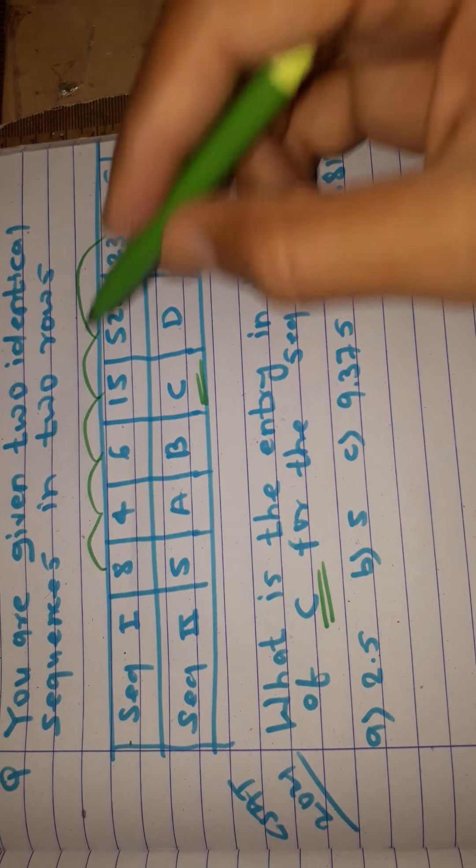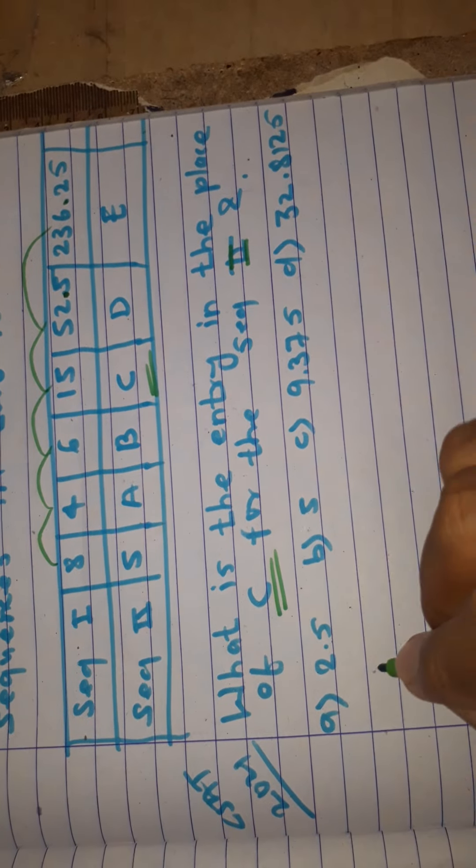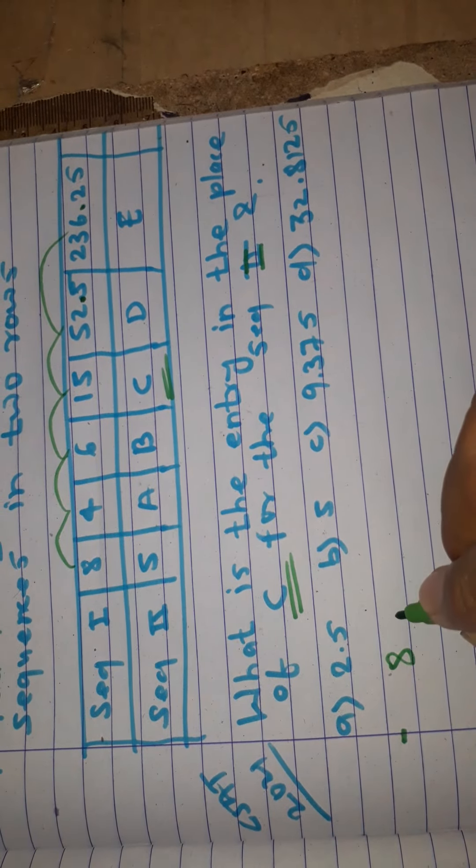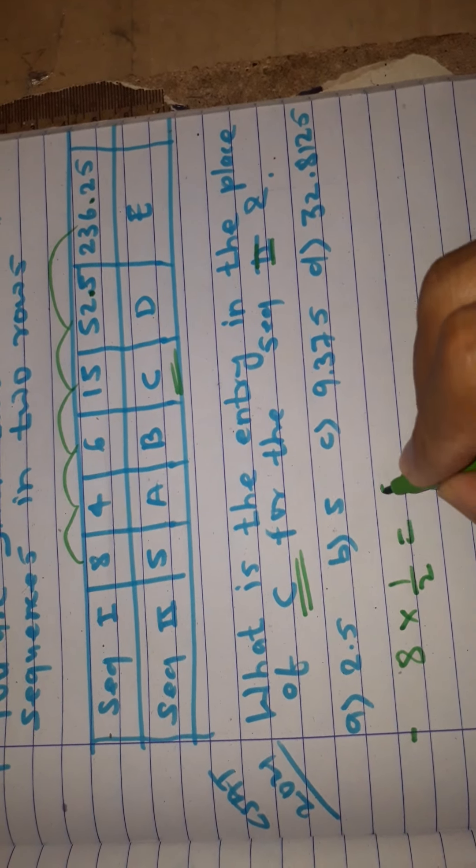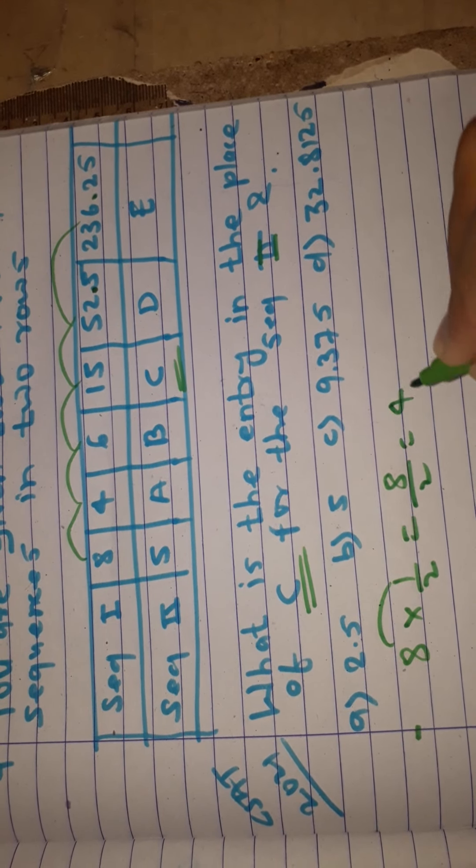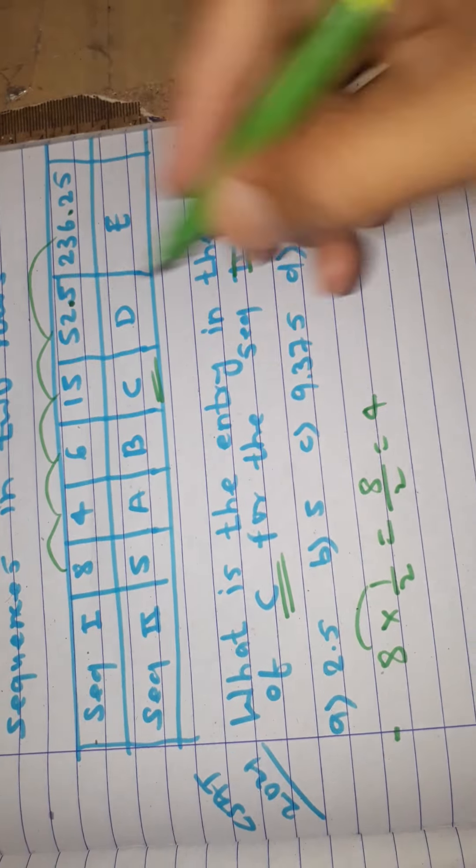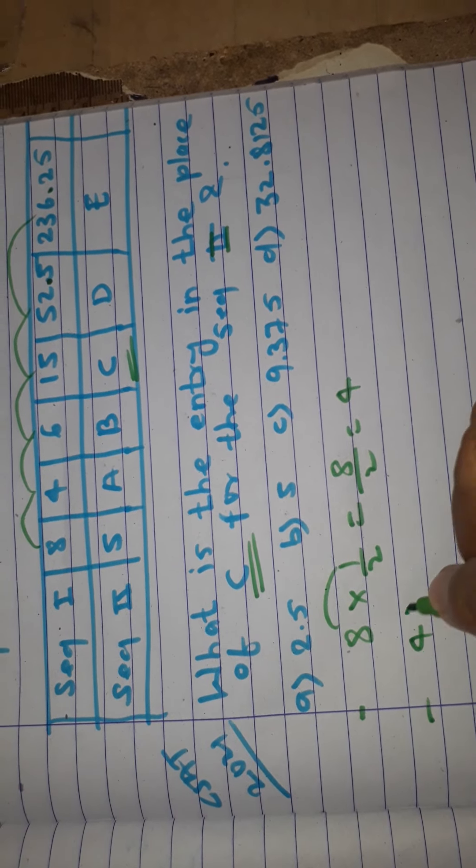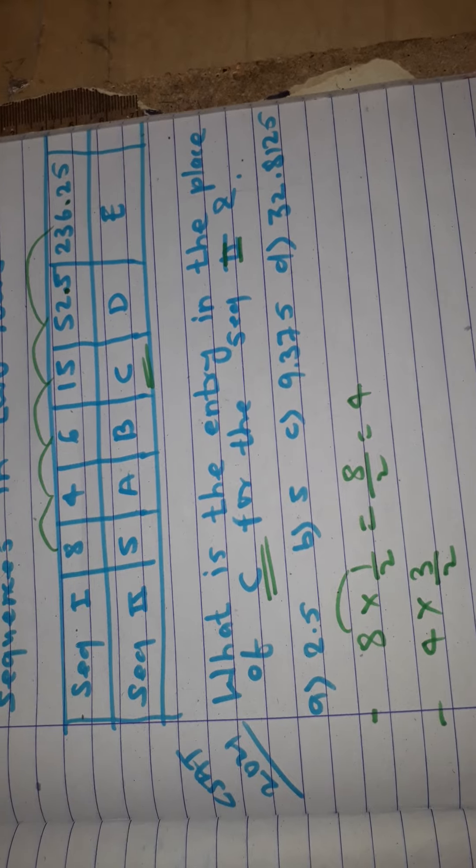First, 8 multiply by 1/2, then 8 into 1/2 equals 4. This sequence is correct, 8 to 4. Then again, 4 into 3/2.